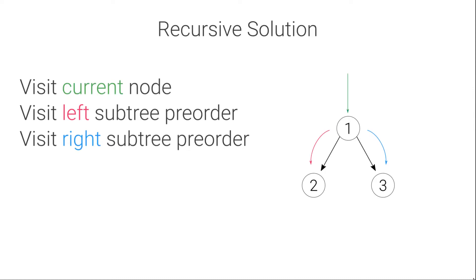Let's see how to do the pre-order traversal of a binary tree using the recursive algorithm. The idea is to start with the root node, then visit the current node, then visit the left subtree pre-order, and then visit the right subtree pre-order.